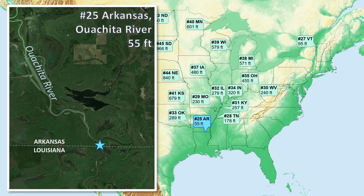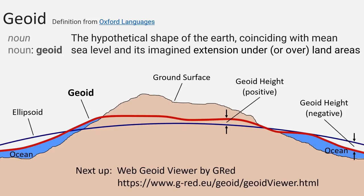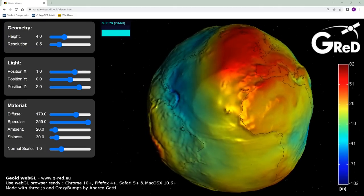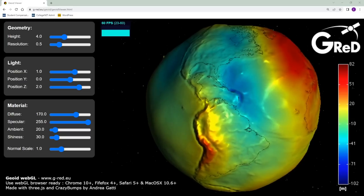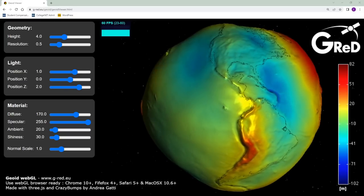The next 21 states all have a low point of sea level. To avoid a 21-way tie, geoid heights are used for ranking. The geoid is the hypothetical shape of the earth coinciding with mean sea level and its imagined extension under or over land areas. This arises because gravity is not exactly equal everywhere, so sea level is an undulating surface that varies by many tens of meters.